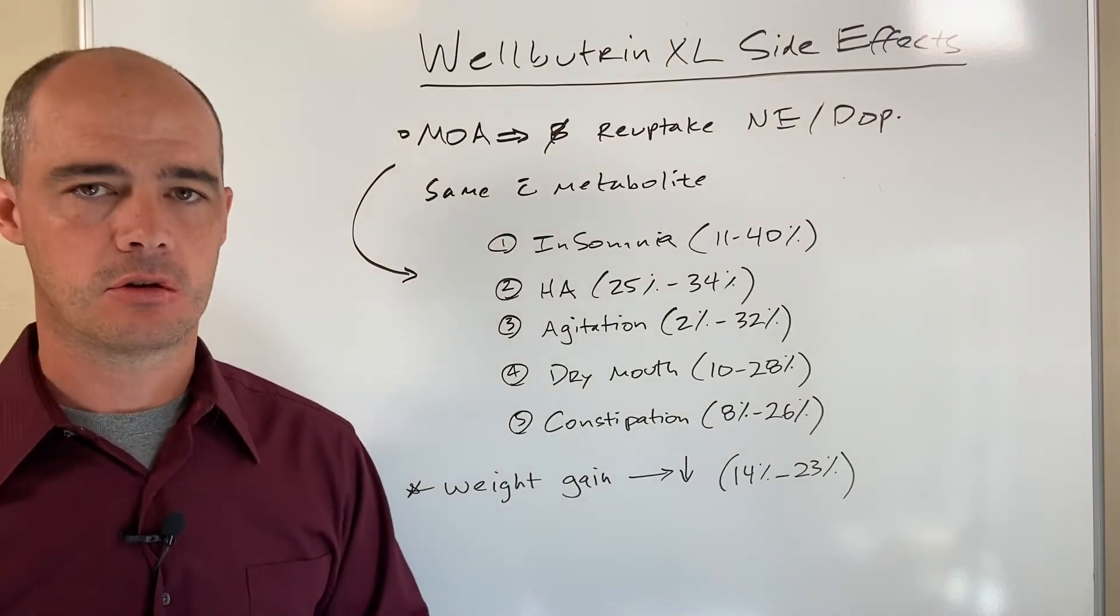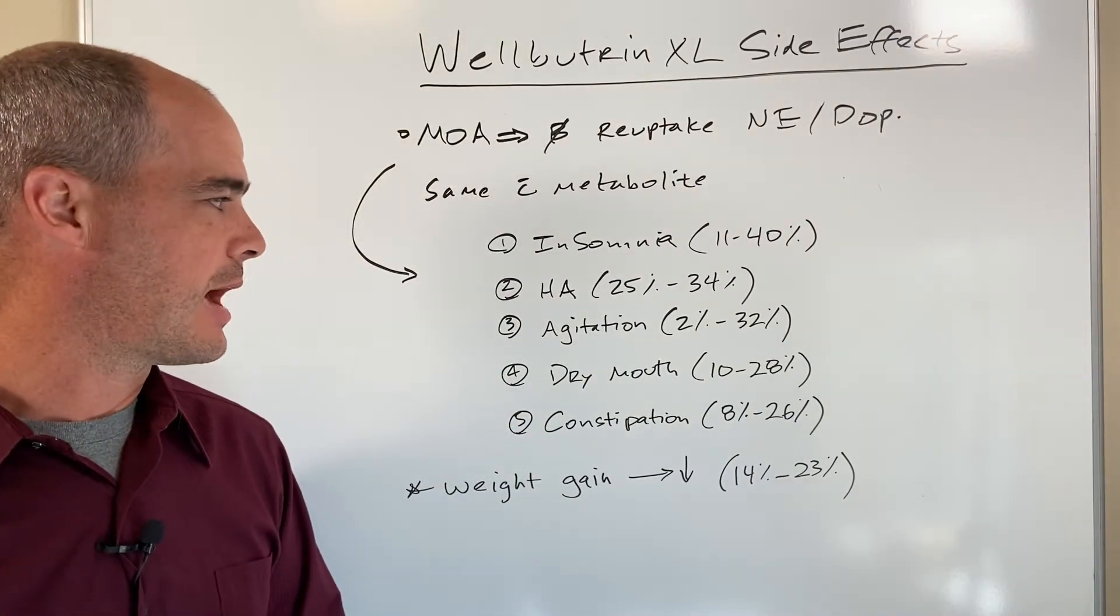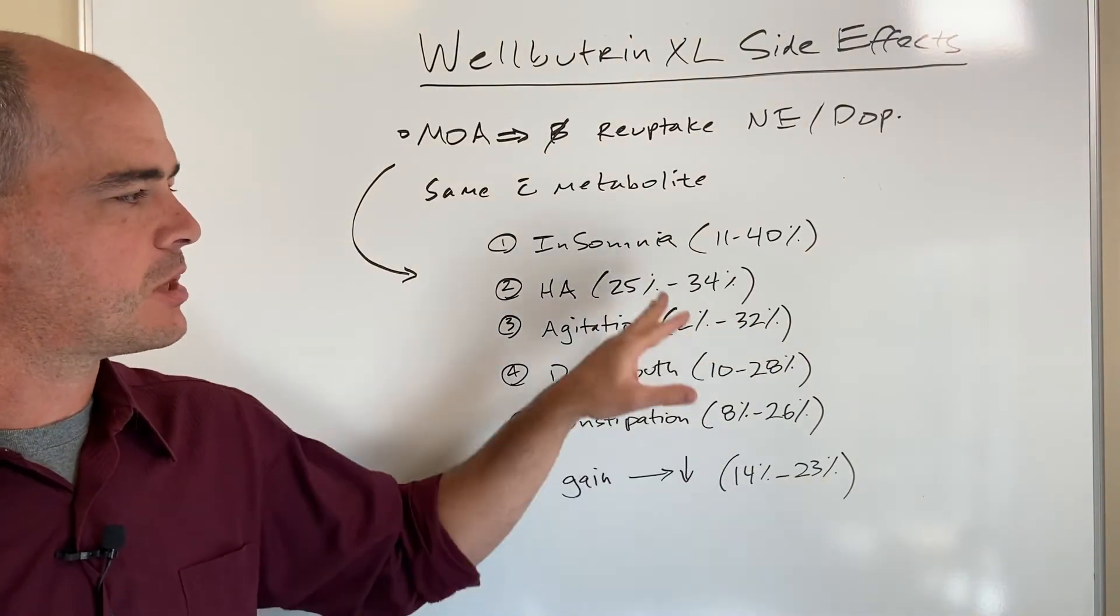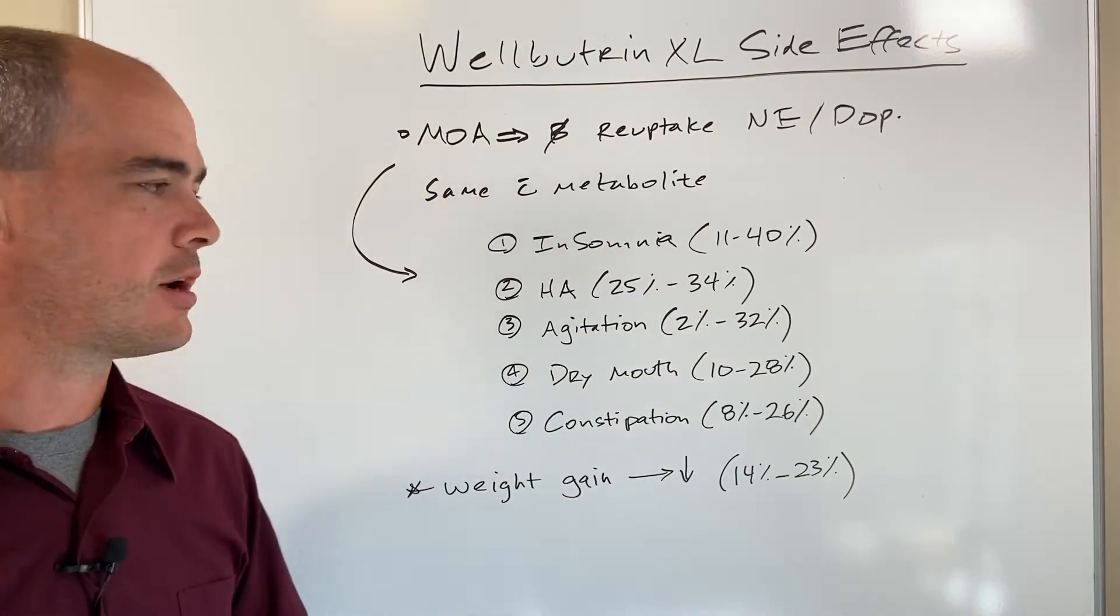Headache occurs in 25 to 34 percent. Agitation is as low as 2 percent to 32 percent. Some of the numbers that you see are interesting.